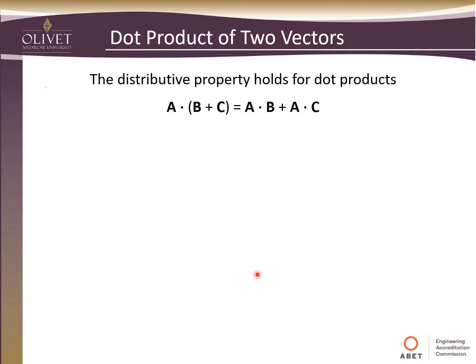The distributive property also holds for dot products: A dot (B plus C) equals A dot B plus A dot C. We can distribute inside and that is a valid property for dot products.